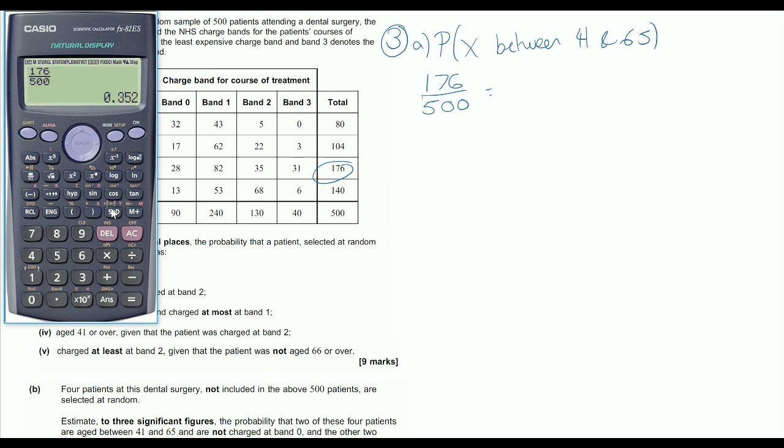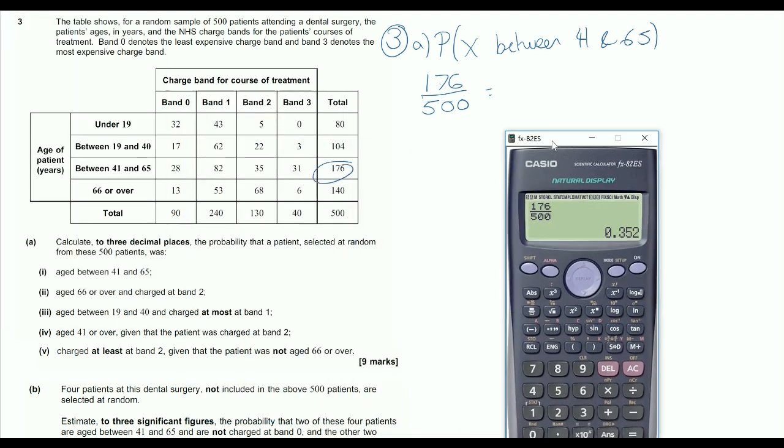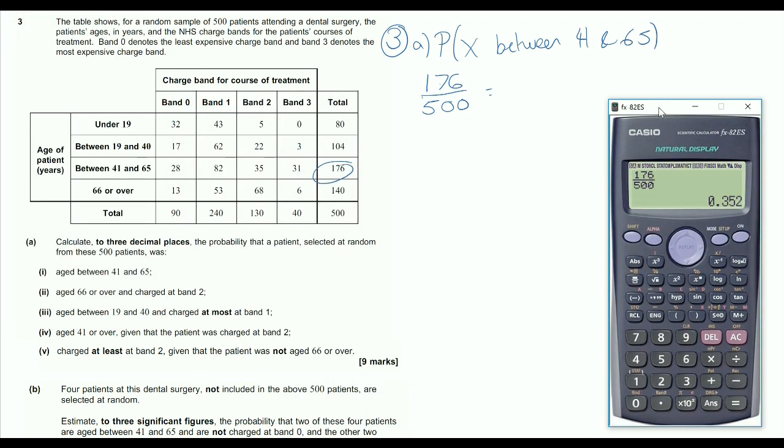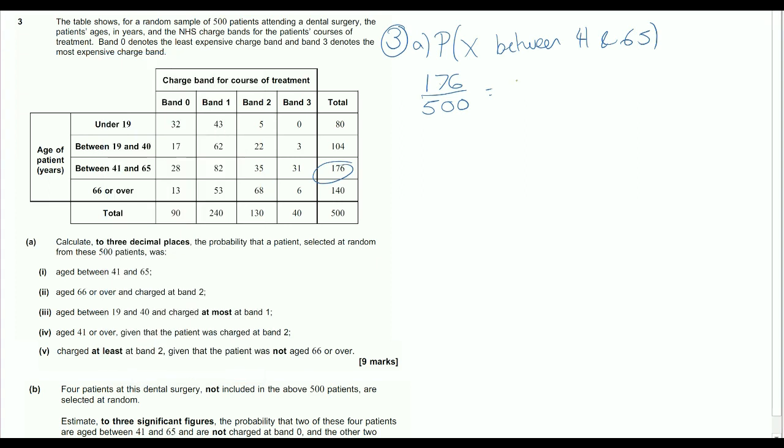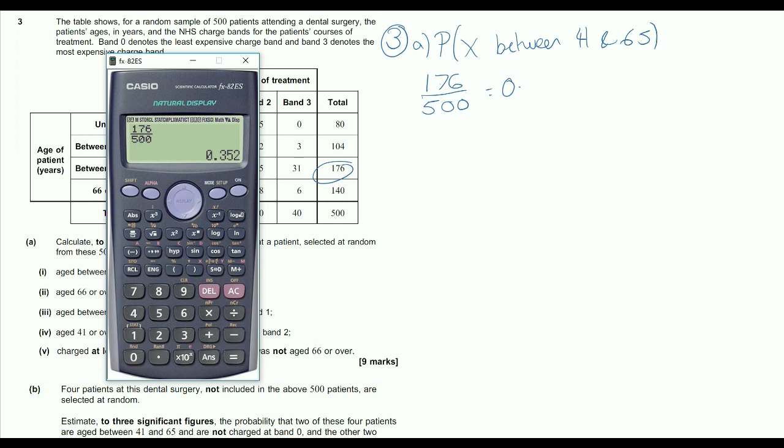And that's just giving me a simplified one. But, and this was a mistake that I made when I first looked at this, I need it all calculated to three decimal places. So I need to make sure that every time I do any of these questions in part A, I do write it to 3SF. So 0.352 there.